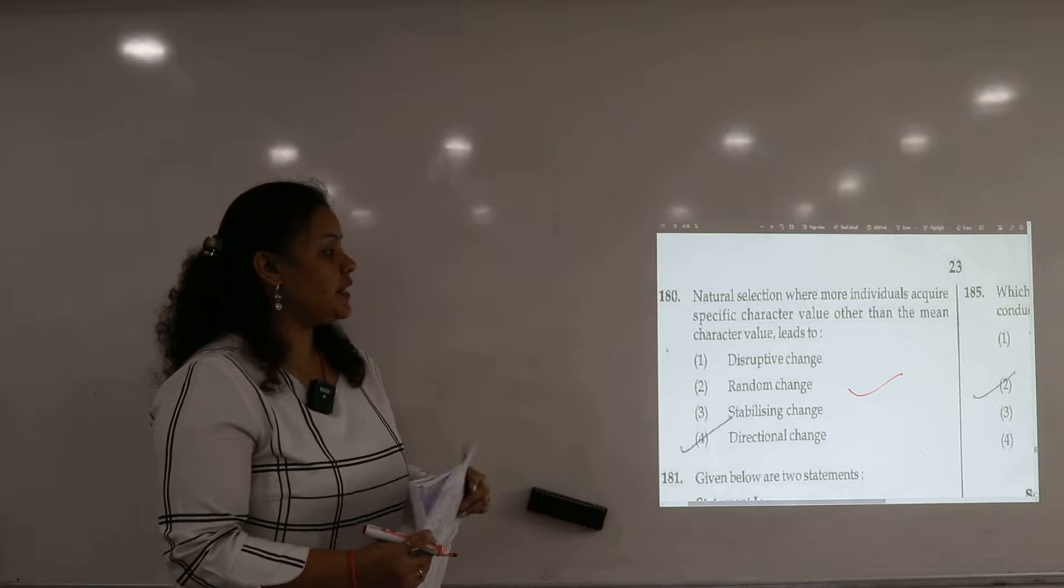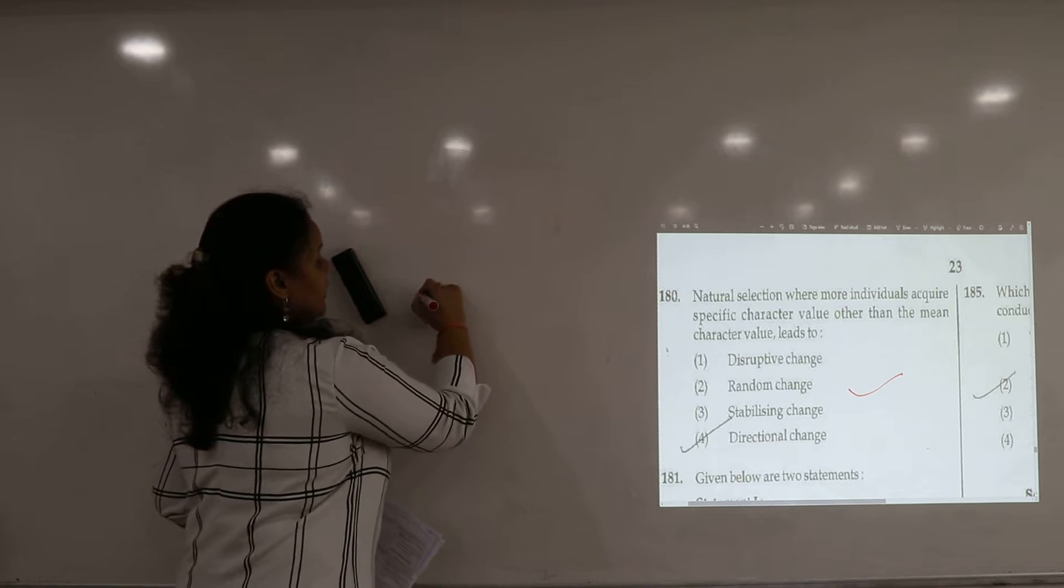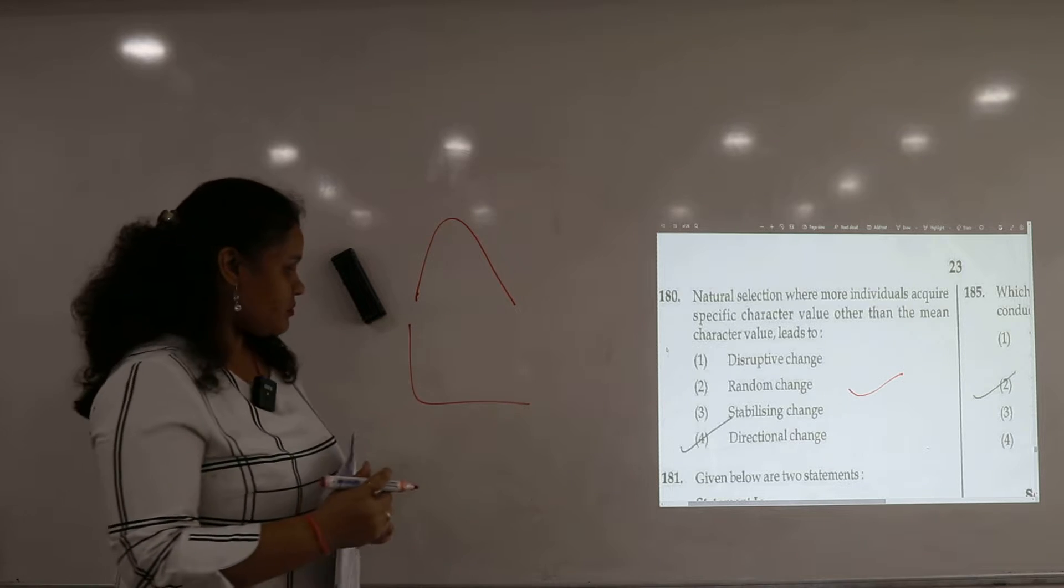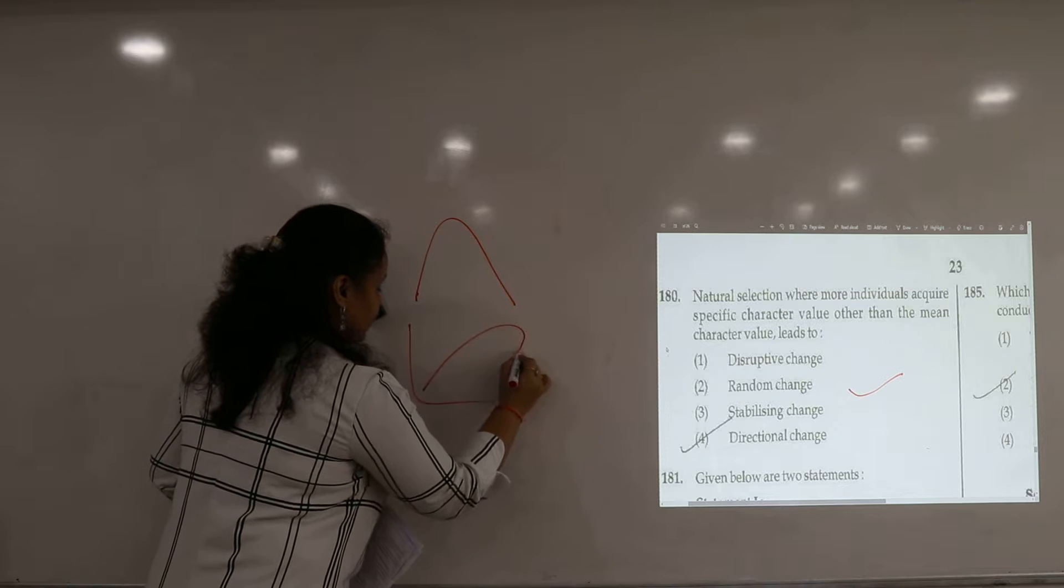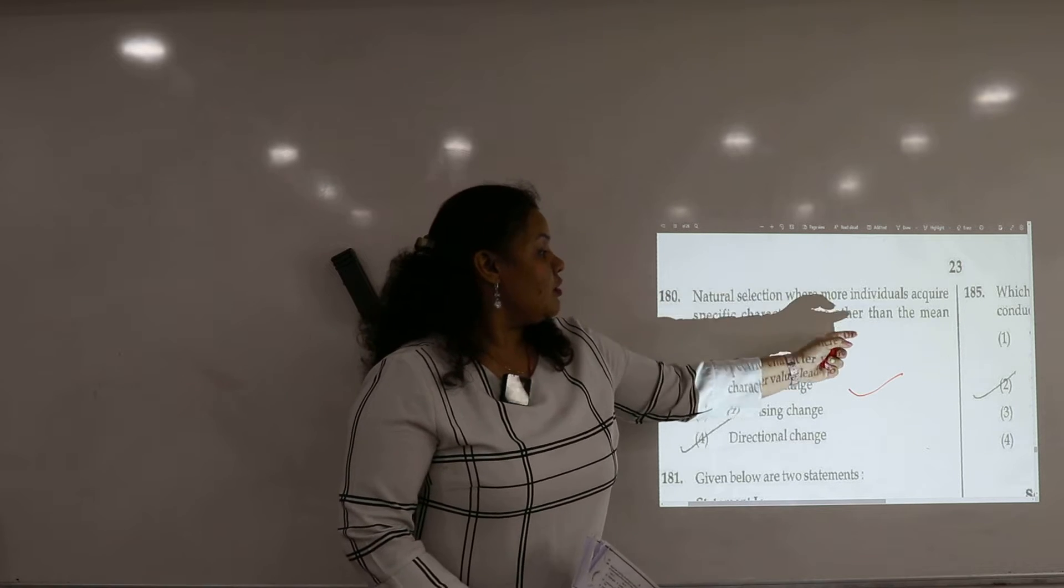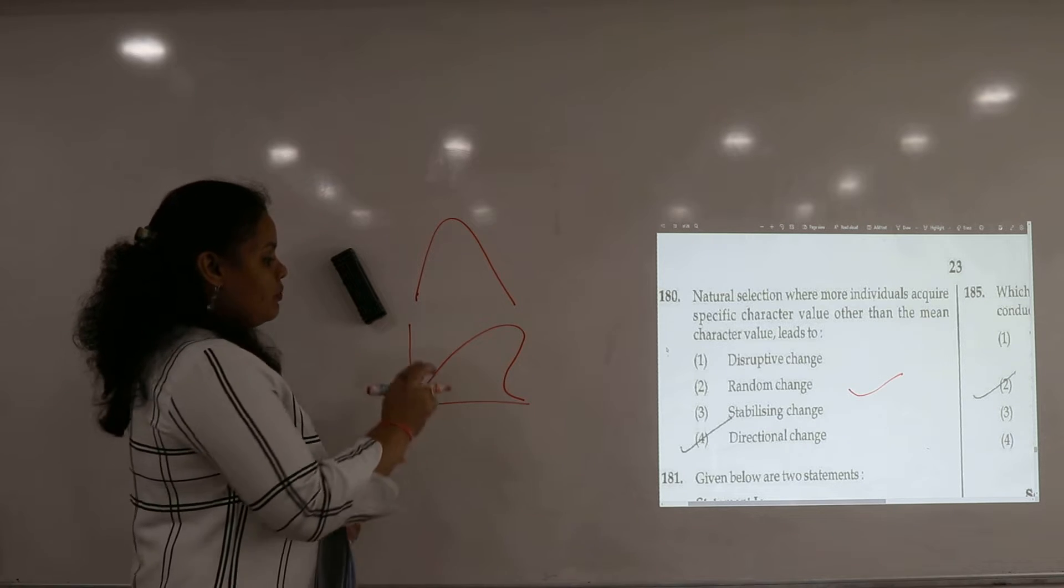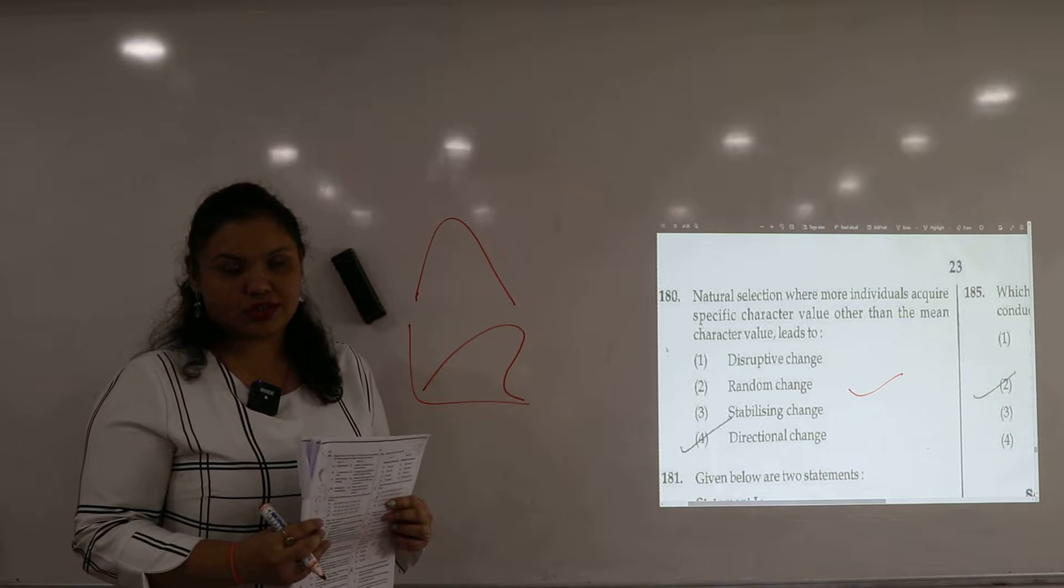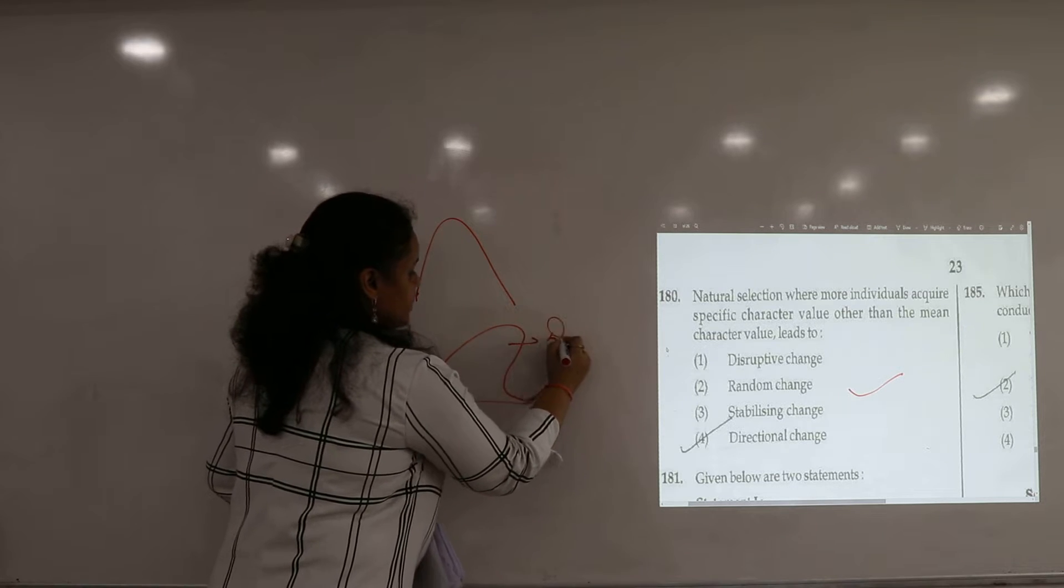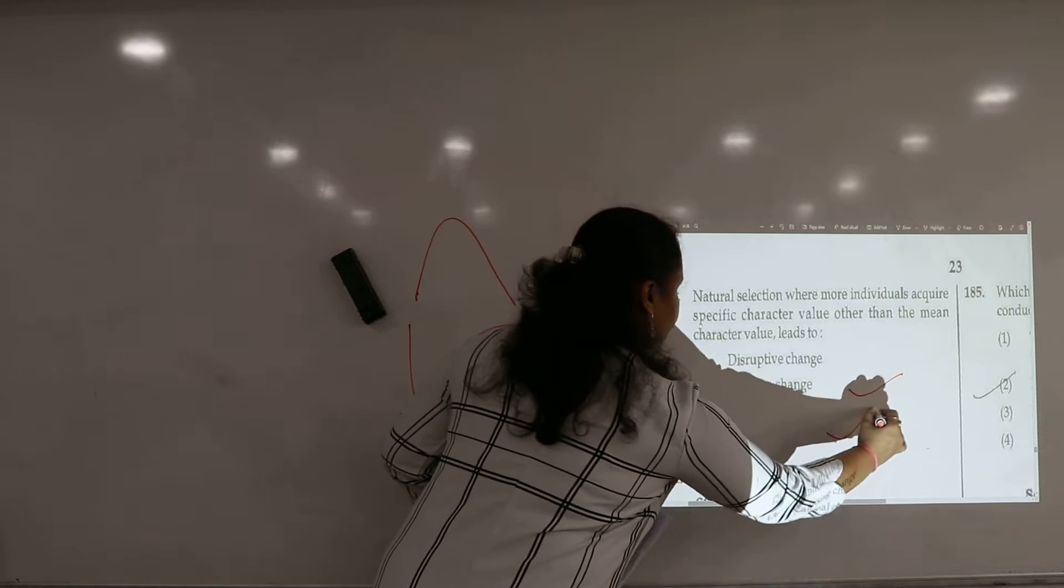Now next question 180. Natural selection where more individuals acquire specific character value other than the mean character value. So we are talking about the example we are studying in industrial melanism. So we are talking about this graph which we are talking about natural selection. So the most individual's specific character value is other than the mean character value. For example after industrial revolution we got the most growth, peppered moth or we can say black colored moth. So this graph is directional, this side bend, then directional change. So in this case the right answer will be your fourth.